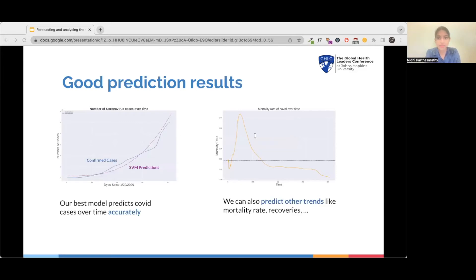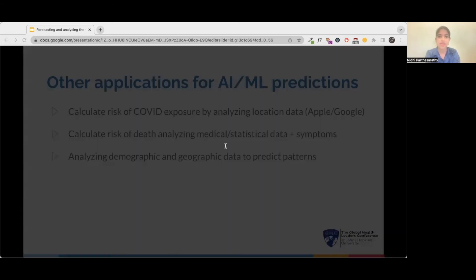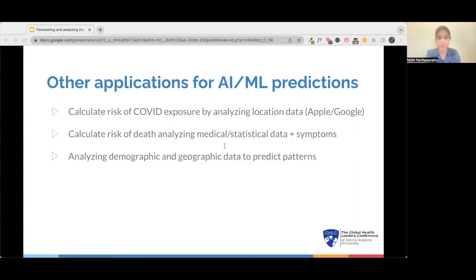So how did these models perform? Both the SVM and the linear regression gave great results, but the SVM model had much better accuracy compared to the linear regression model. The picture on the left shows just how precise the prediction was to the actual reality. You can see the two lines are almost on top of each other. Not only could we predict the number of cases, but we could also use the model to predict various other trends like mortality rates, recoveries, etc. The picture on the right shows one such example, in this case, the mortality rate of COVID over time.